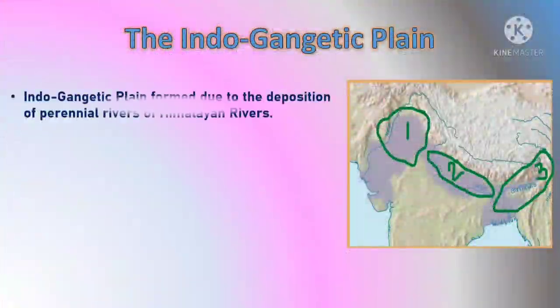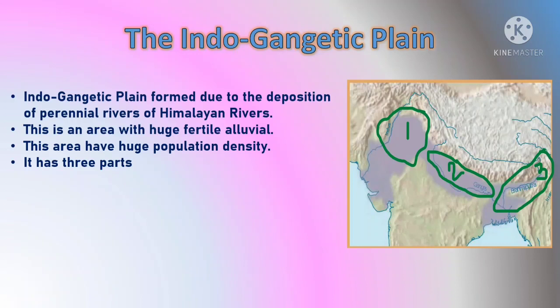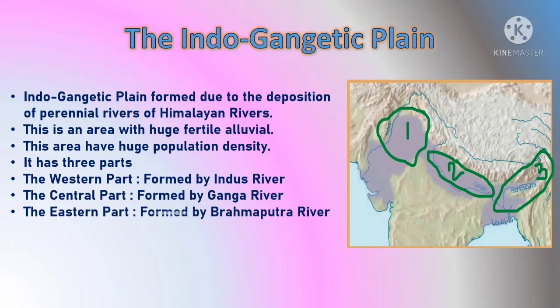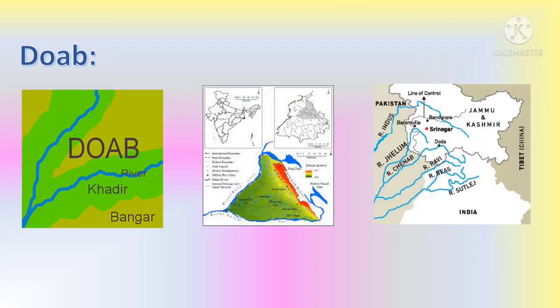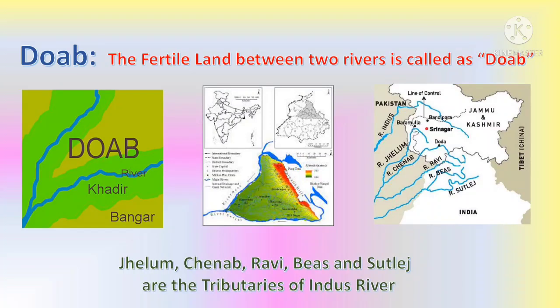The Indo-Gangetic plain is a great plain at the foothills of the Himalayas, formed due to the deposition of Himalayan rivers. It is an area with huge fertile alluvial soil and has a very high population density. It has three parts: the western part formed by the Indus river, the central part formed by the Ganga river, and the eastern part formed by the Brahmaputra river. In Arabic, 'Doab' means the fertile land between two rivers, and we can observe more Doabs at the Indus river.